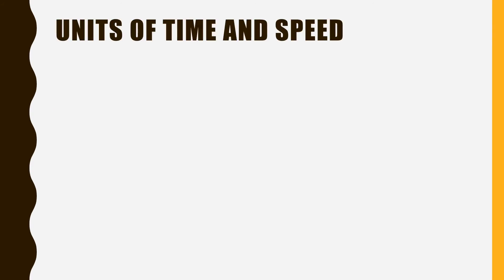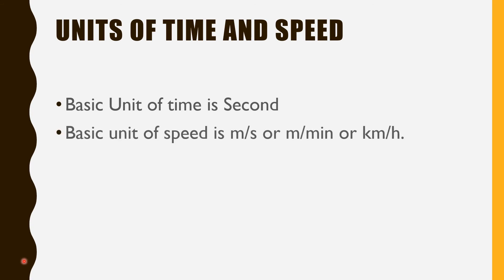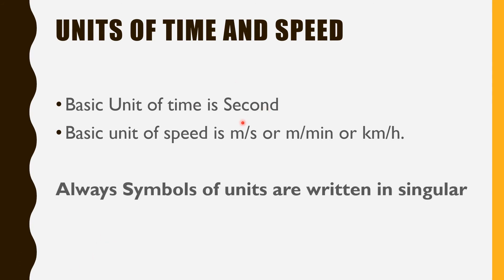The basic unit of time is the second, which is the smallest unit. Larger units are minutes and hours. The basic unit of speed is meter per second, meter per minute, or kilometer per hour. Always remember that symbols of units are written in singular — not 'meters per second' or 'kilometers per hour'. Writing them in plural is wrong. They are always written in singular.